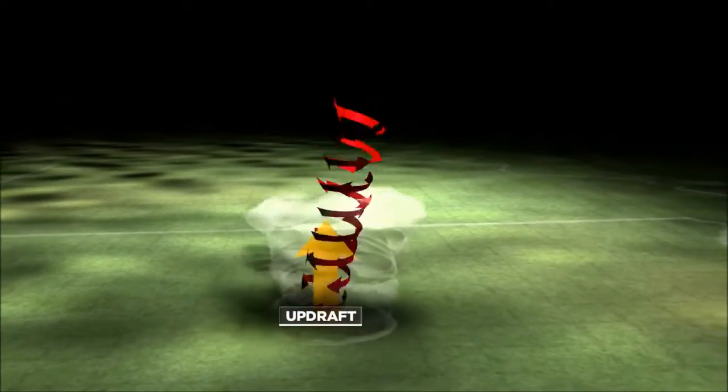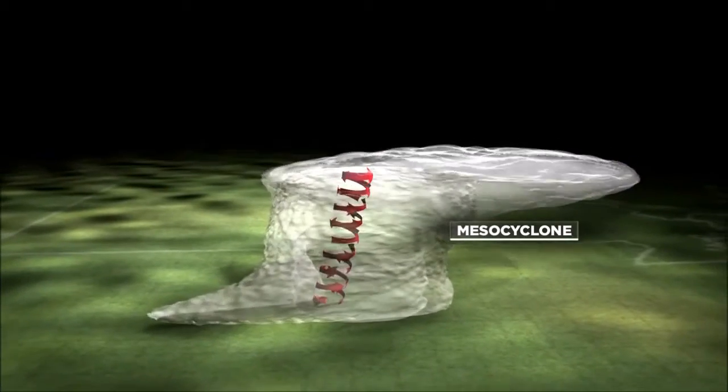This vertical rotation of air within the cell is a mesocyclone, an indication that a regular thunderstorm has become a supercell. A supercell thunderstorm is a very complex animal. It has very strong updrafts. The winds can be moving upwards at 100 miles an hour.